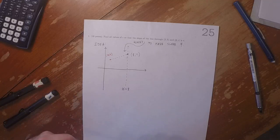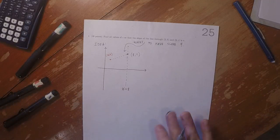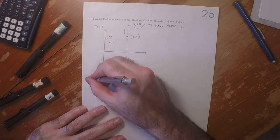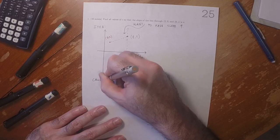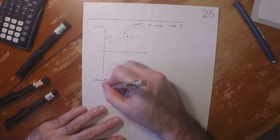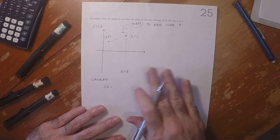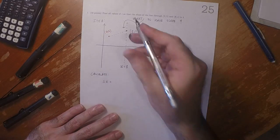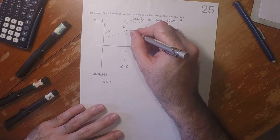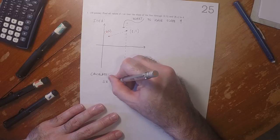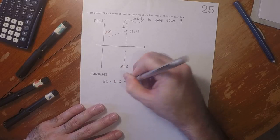Okay. So now let's calculate. So the change in x, that is 8 minus 2, which is 6.